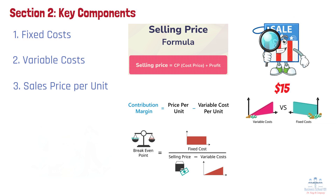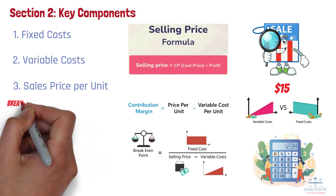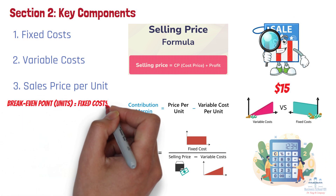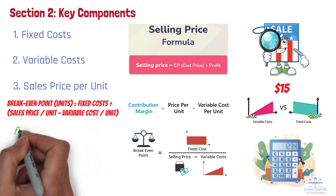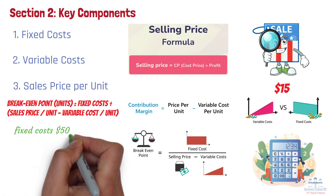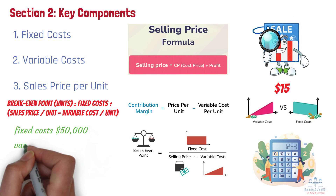By calculating the difference between the sales price and the variable cost, businesses can determine how many units they need to sell to cover their fixed costs. The formula for the break-even point is: Break-Even Point = Fixed Costs ÷ (Sales Price per Unit − Variable Cost per Unit). For example, in EcoCup's case, if its fixed costs — such as rent, salaries, and marketing — total $50,000, while the variable cost per cup, including materials and packaging,